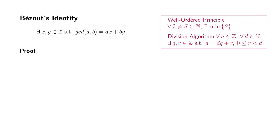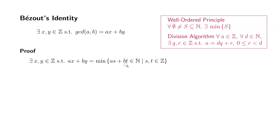Let's start the proof using the well-ordering principle. Consider this set of positive linear combinations of a and b. We know that this set is non-empty because you can set s to be a and t to be b, giving a squared plus b squared. Since at least one of a and b is non-zero, a squared plus b squared is going to be at least one, so we know this set is non-empty.